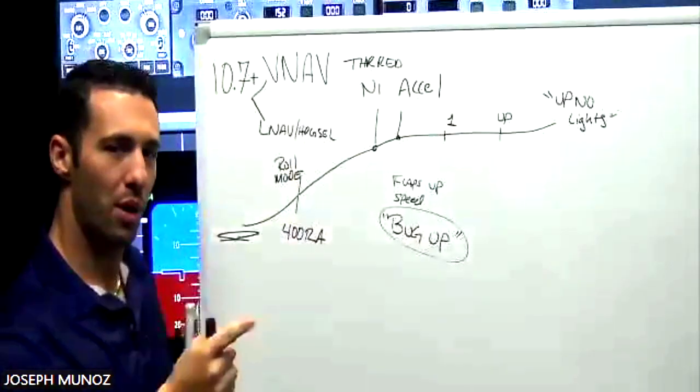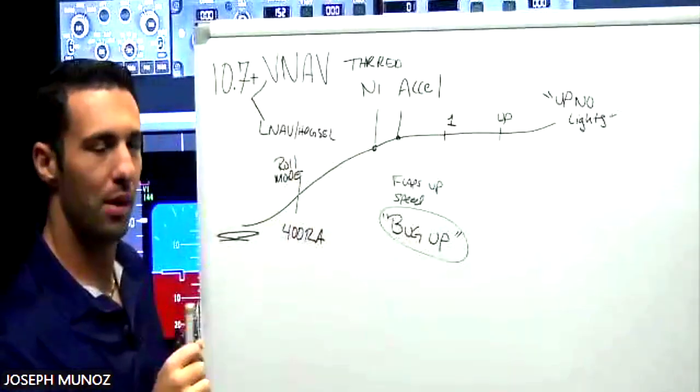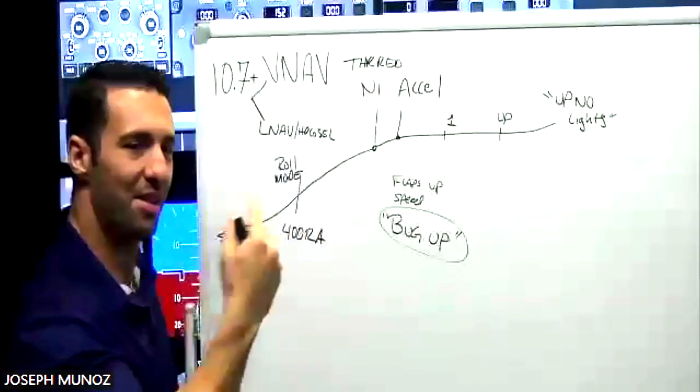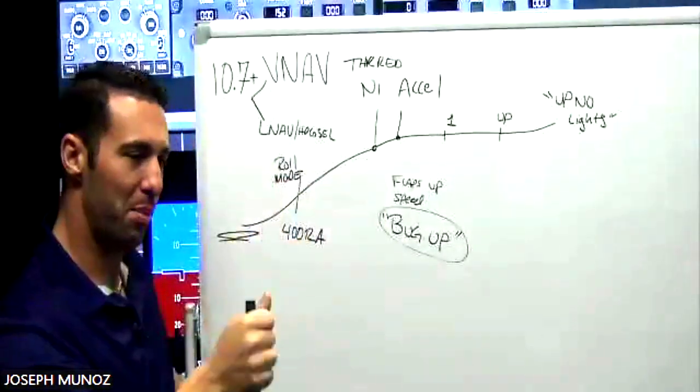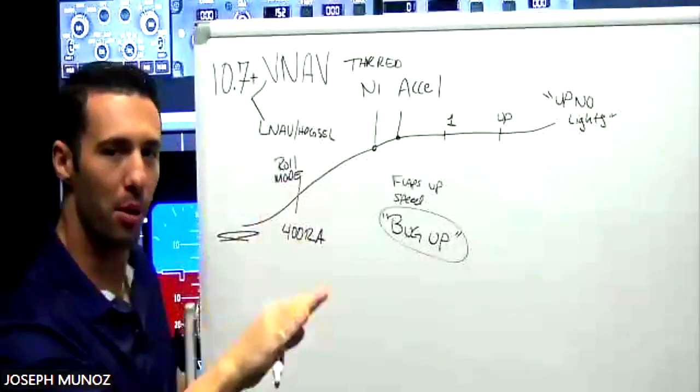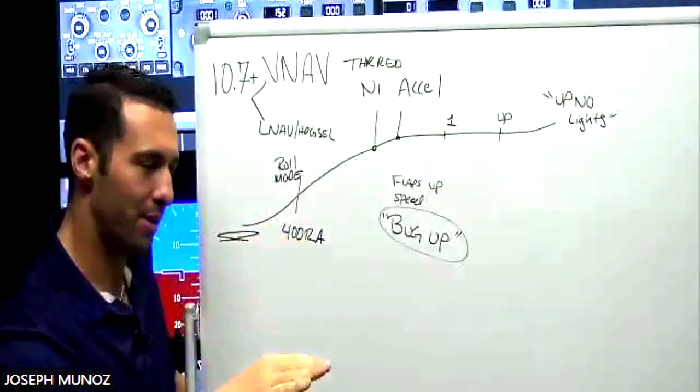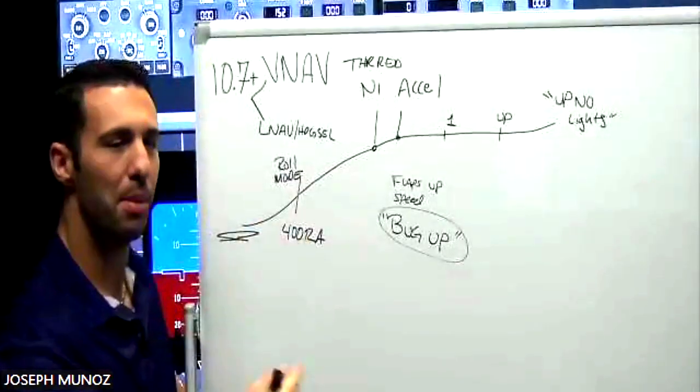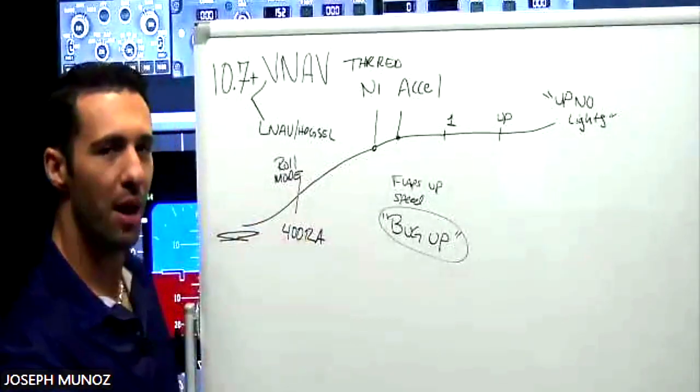You're going to say N1, bug up. N1 reduces thrust, bug up accelerates by moving the speed bug up, which commands the flight director bar to reduce, lowers the angle of attack, pitches down to accelerate so that we can speed up to clean up and get the flaps retracted.